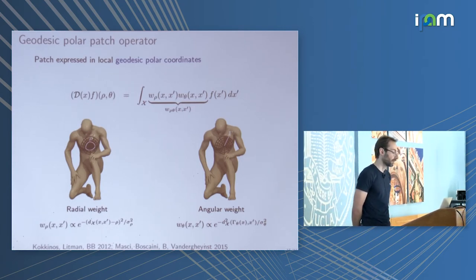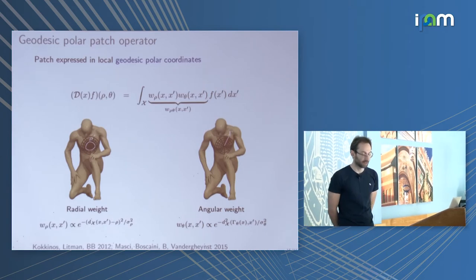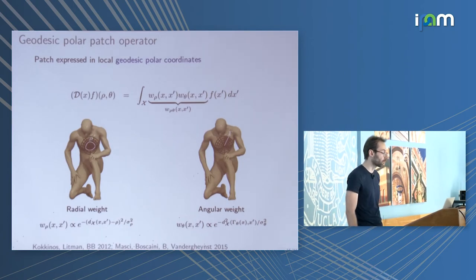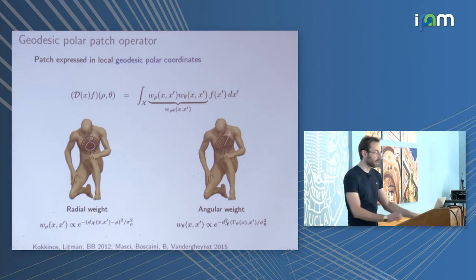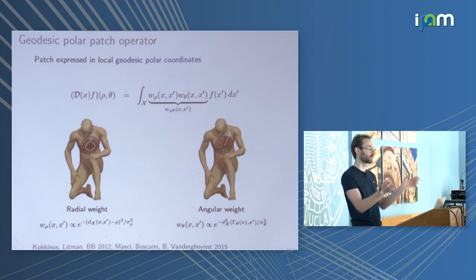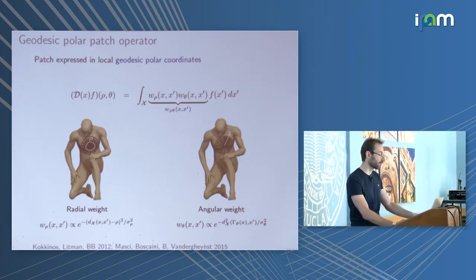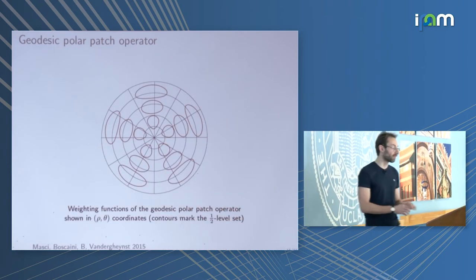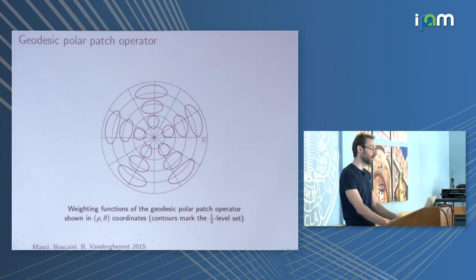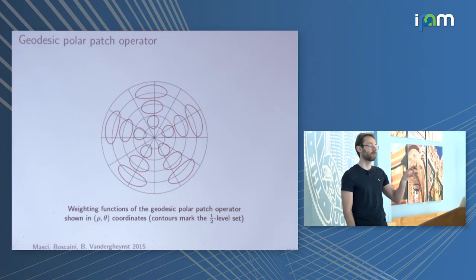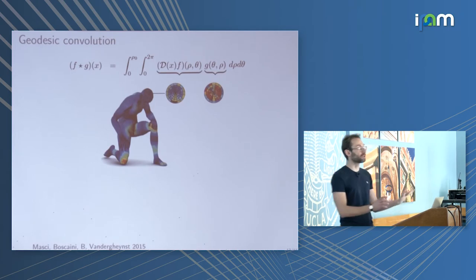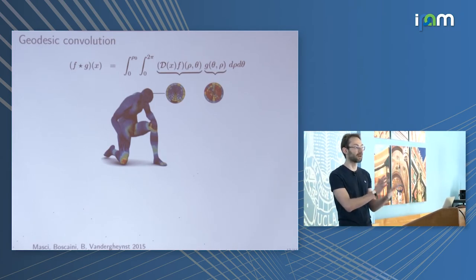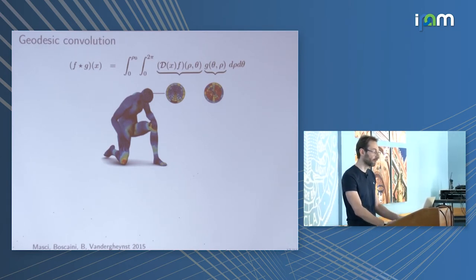About five years ago we proposed the intrinsic shape context descriptor, generalizing the famous shape context descriptor to manifolds. The idea is to use a local geodesic polar coordinate system where the radial coordinate is geodesic distance and the angular coordinate is evenly-spaced angles. We use Gaussian weights in these coordinates — think of each Gaussian as a pixel extracting the local values of a function. We define convolution by extracting a patch at each position, multiplying by a template, and summing.